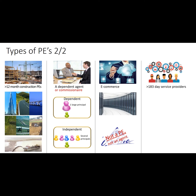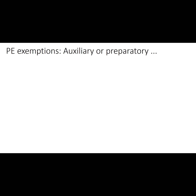Lastly, service PEs. Some states consider that profits from services performed on their territory should be taxable by them, because those profits are sourced in their state, even in the absence of a fixed place of business. The OECD model convention includes alternative text for Article 5, under which such a services PE comes into existence if the services provided exceed more than 183 days during any 12-month period.